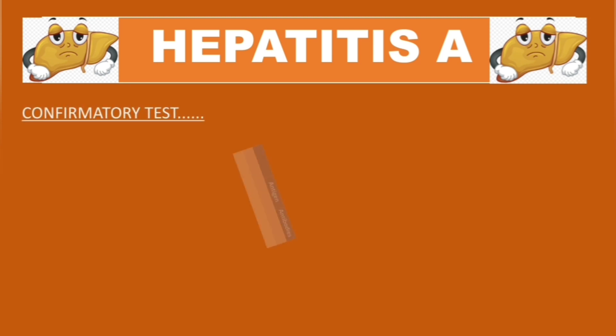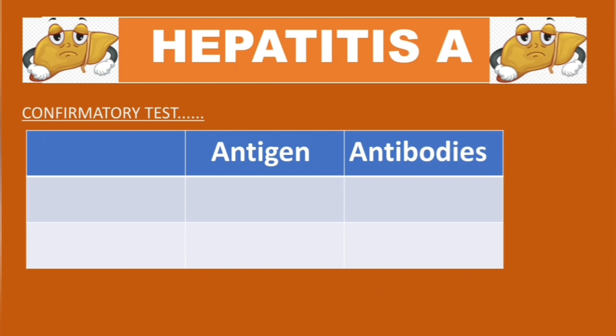If there is active infection, stool and serum samples are taken, and using polymerase chain reaction, or PCR, the HAV RNA can be detected — this is the actual antigen, the HAV itself.